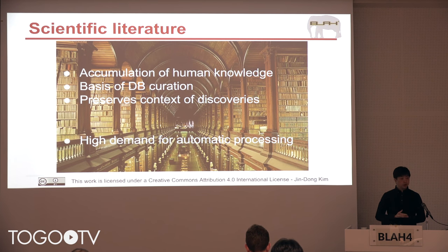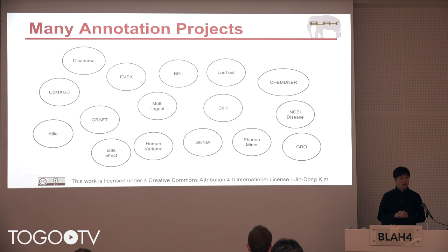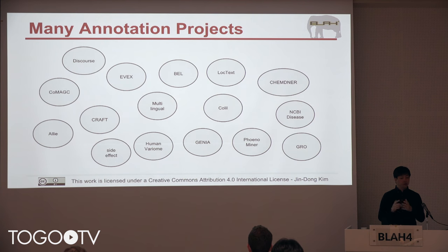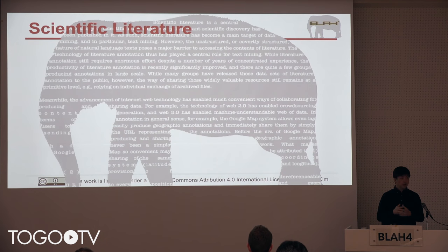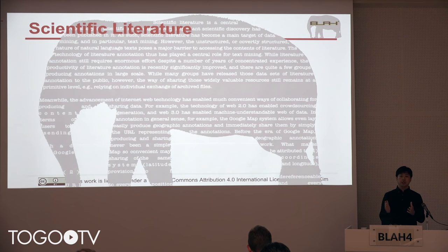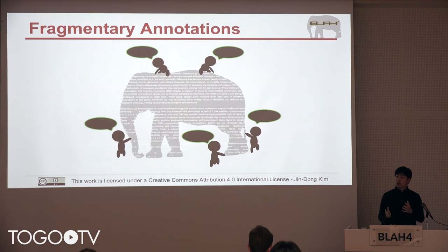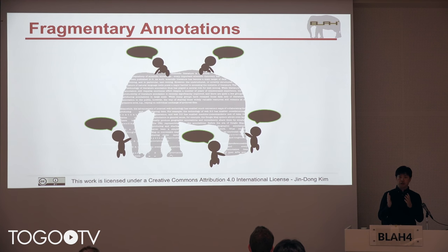We all know there is a very high demand for automatic processing of scientific literature, and consequently there are now many annotation projects out there. But scientific literature as a continuum is big — it is like a giant elephant. When we think about individual annotation projects, they are like touching only fractions of the giant elephant.